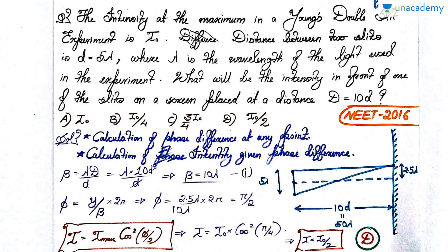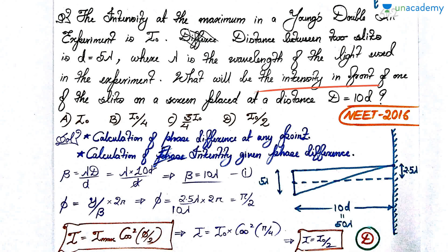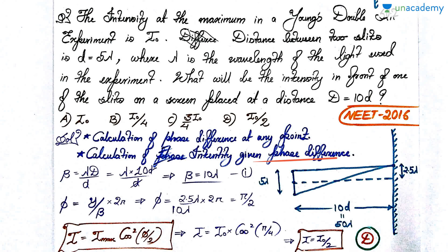The last question on YDSE: the intensity at the maximum in a Young's double slit experiment is I₀. The distance between the two slits is d = 5λ, where λ is the wavelength of light used. What will be the intensity in front of one of the slits on a screen placed at distance D = 10d? I have drawn the diagram: slit separation is 5λ and screen distance is 10d = 50λ.